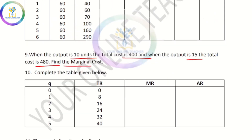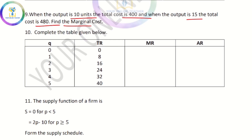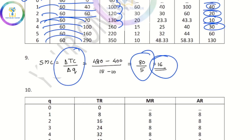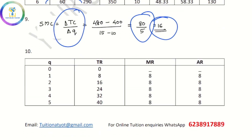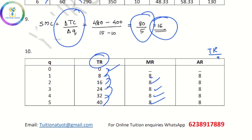The 15th problem is we fill the table. It is marginal revenue. 8 minus 0 is 8, 16 minus 8 is 8, 24 minus 16 is 8, 32 minus 24 is 8, 40 minus 32 is 8. AR is TR divided by Q.